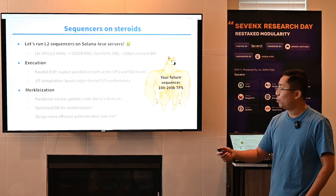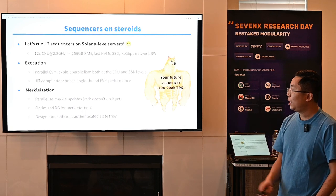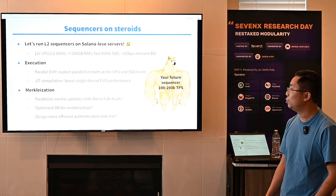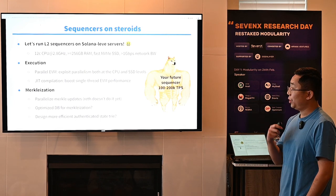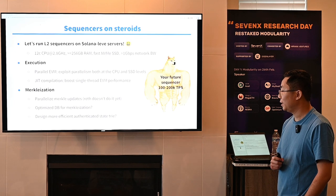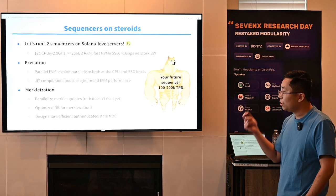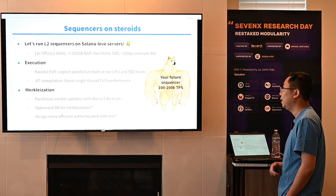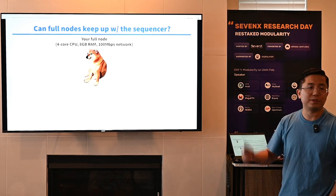To improve execution performance, we can do parallel EVM to exploit parallelism at both the CPU and SSD level, and we can do JIT compilation or Stylus EVM-plus techniques to boost single-thread EVM performance. For merkleization, we could parallelize Merkle updates — Reth doesn't do it yet, which is why all our tested workloads are still single-threaded. We could also optimize the DB specifically for merkleization, and design more efficient authenticated data structures to replace MPT or Verkle trees. But sequencers are not really our problem — the real question is whether your full node can actually keep up with the sequencer.